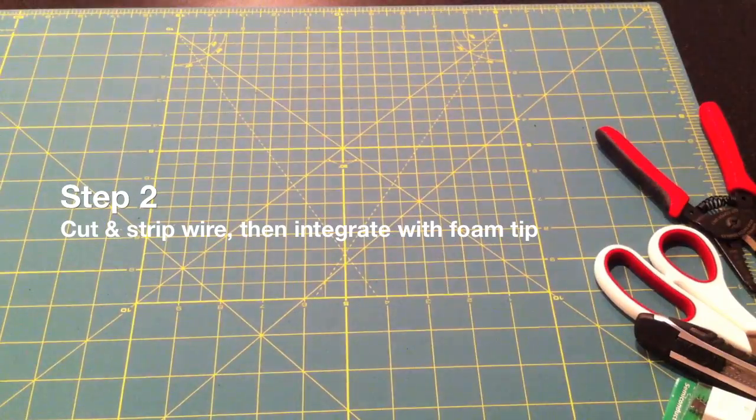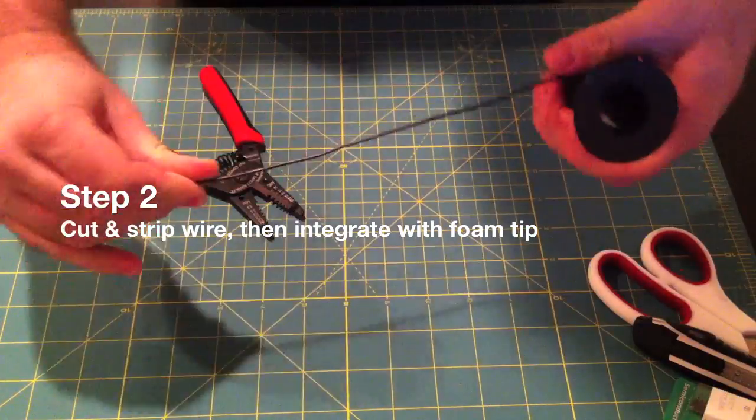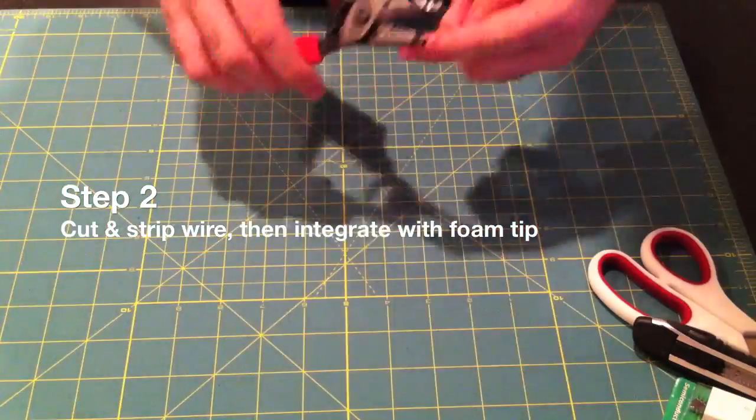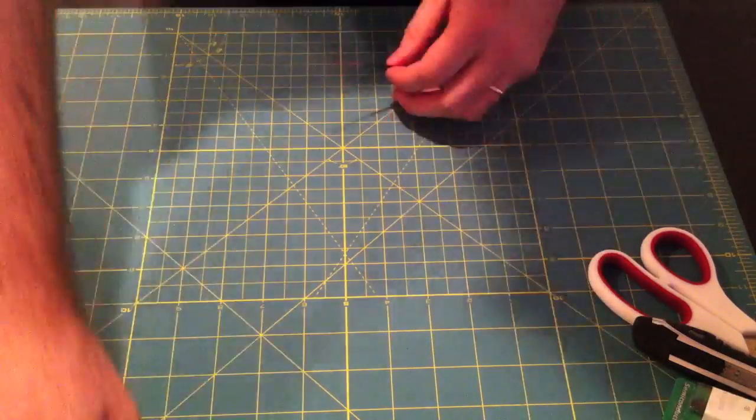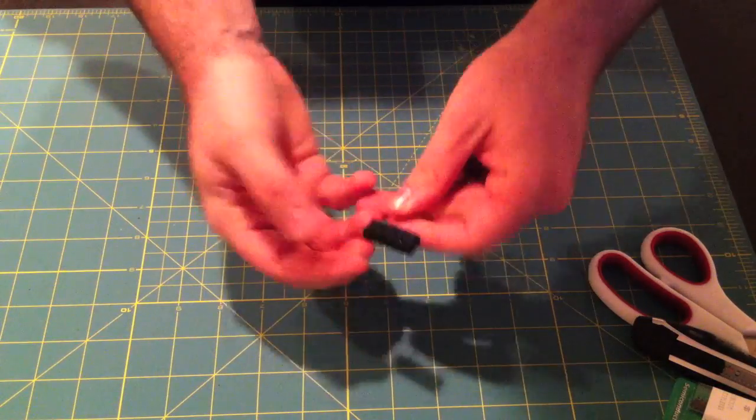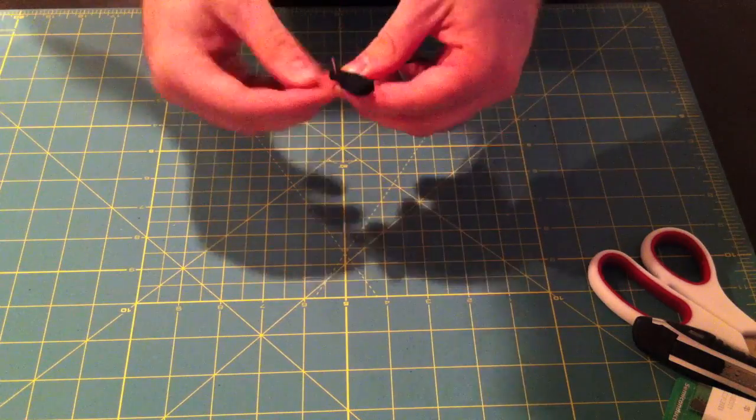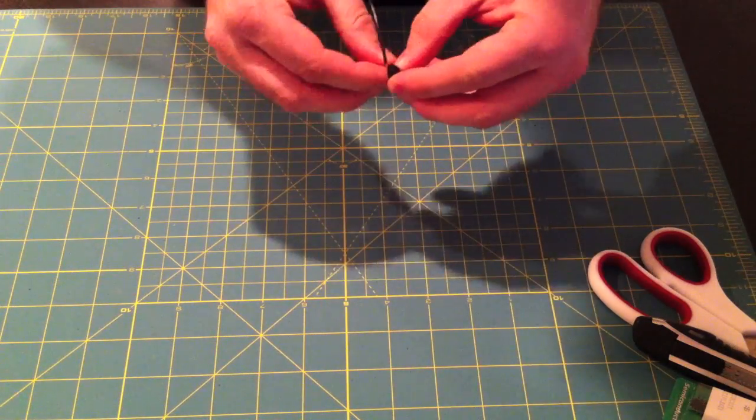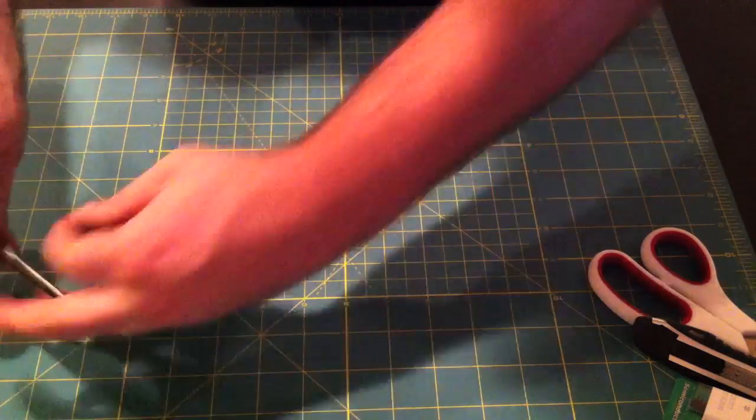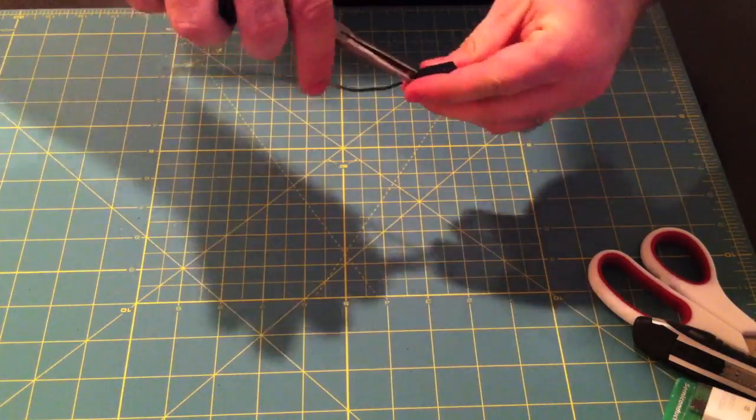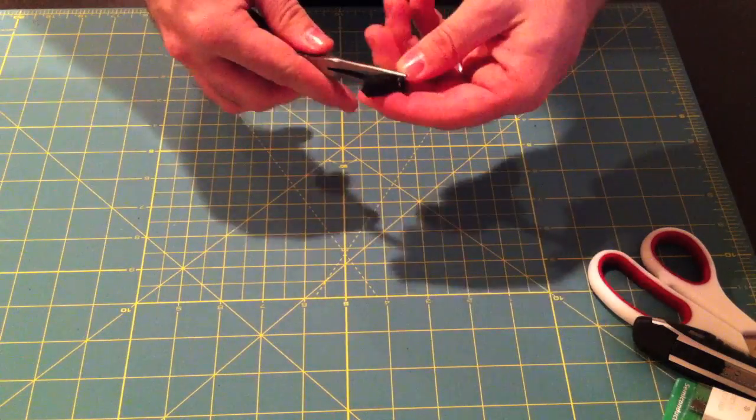For step two, we go ahead and cut the wire, get about a foot long piece, strip a little bit of it, about two inches, stick that through the foam and start wrapping it around. It's important to try and get the wrap as tight as possible. Another thing to consider is that the small circle that you're making there needs to fit into the end of the marker.